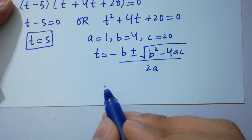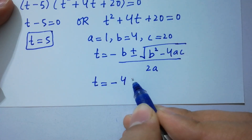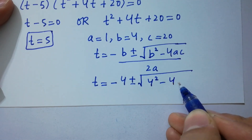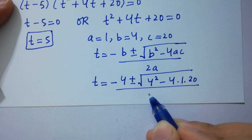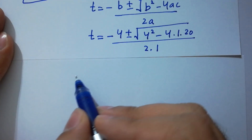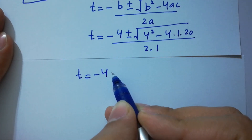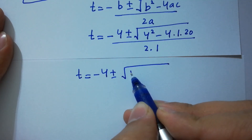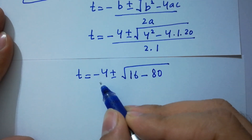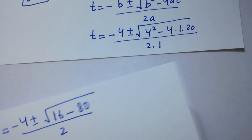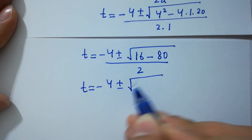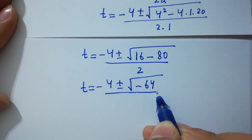Substituting values: t equals minus 4 plus or minus square root of b squared minus 4 times a times c, over 2a. So t equals minus 4 plus or minus square root of 4 times 4, which is 16, minus 4 times 1 times 20, which is 80, over 2. This gives t equals minus 4 plus or minus square root of 16 minus 80, which is minus 64, over 2.